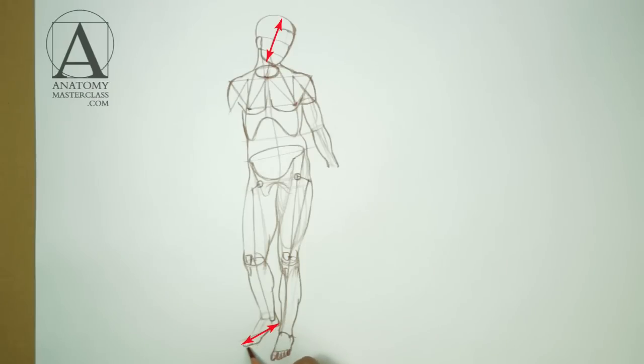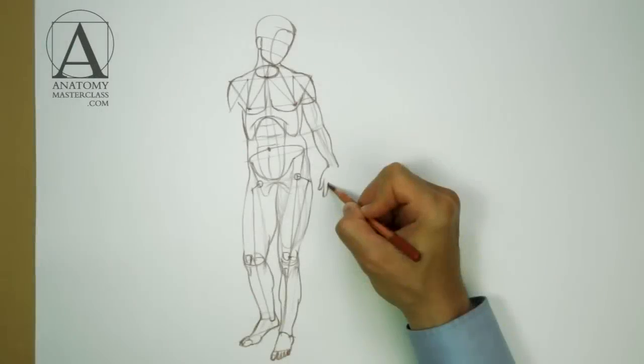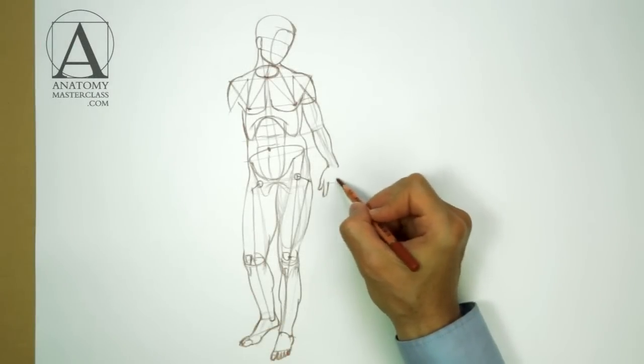Also, keep in mind that the length of the foot is equal to the height of the head. Remember, the length of the hand from the wrist line to the tip of the middle finger is equal to the height of the face from the bottom edge of the chin to the hairline.